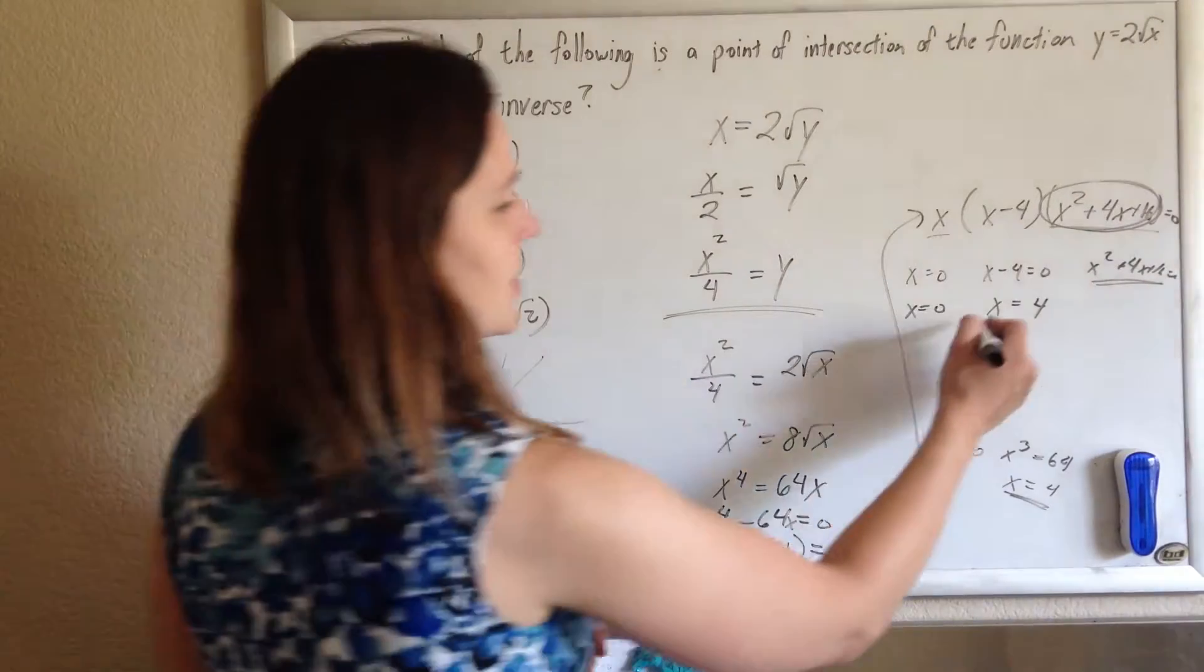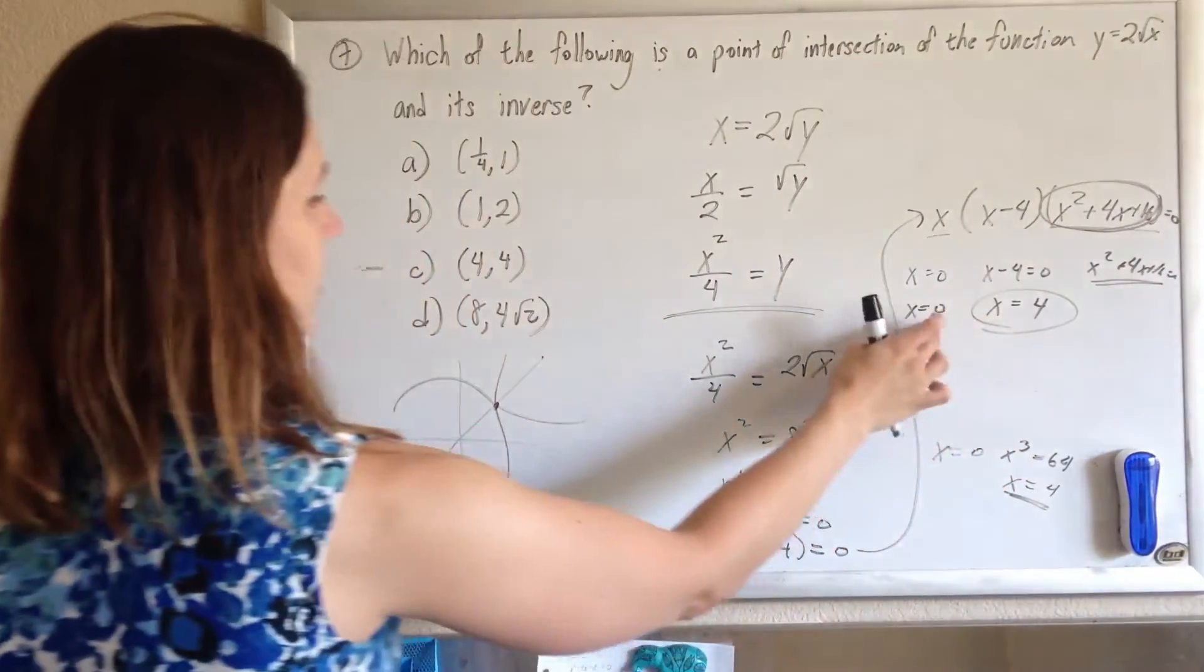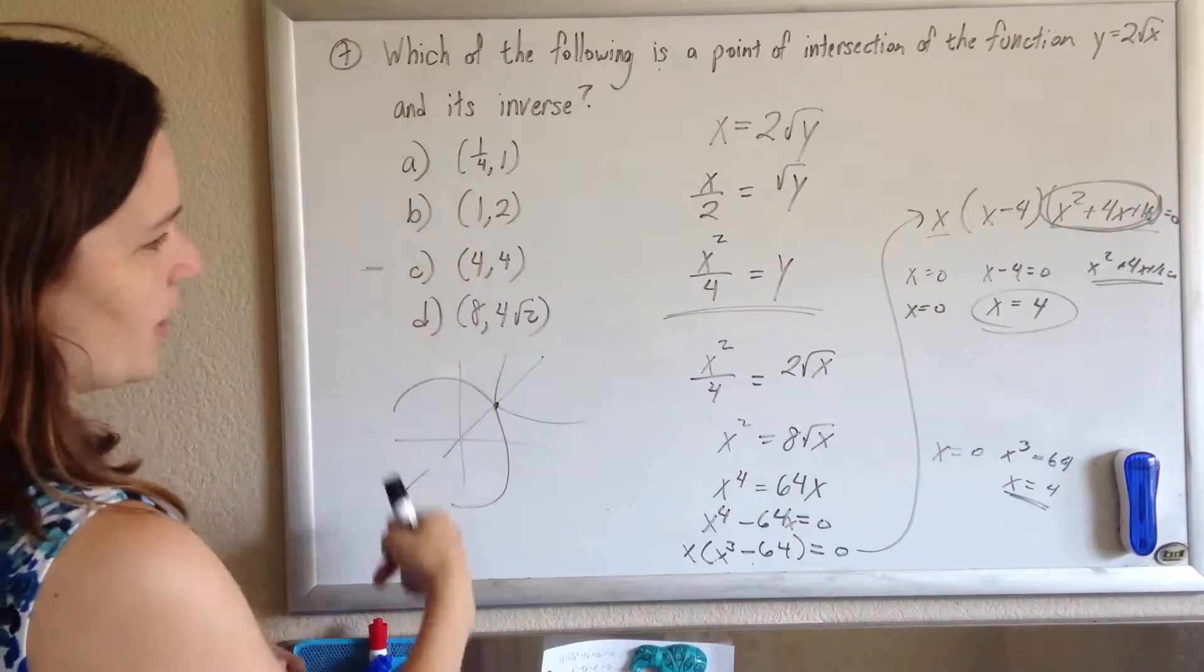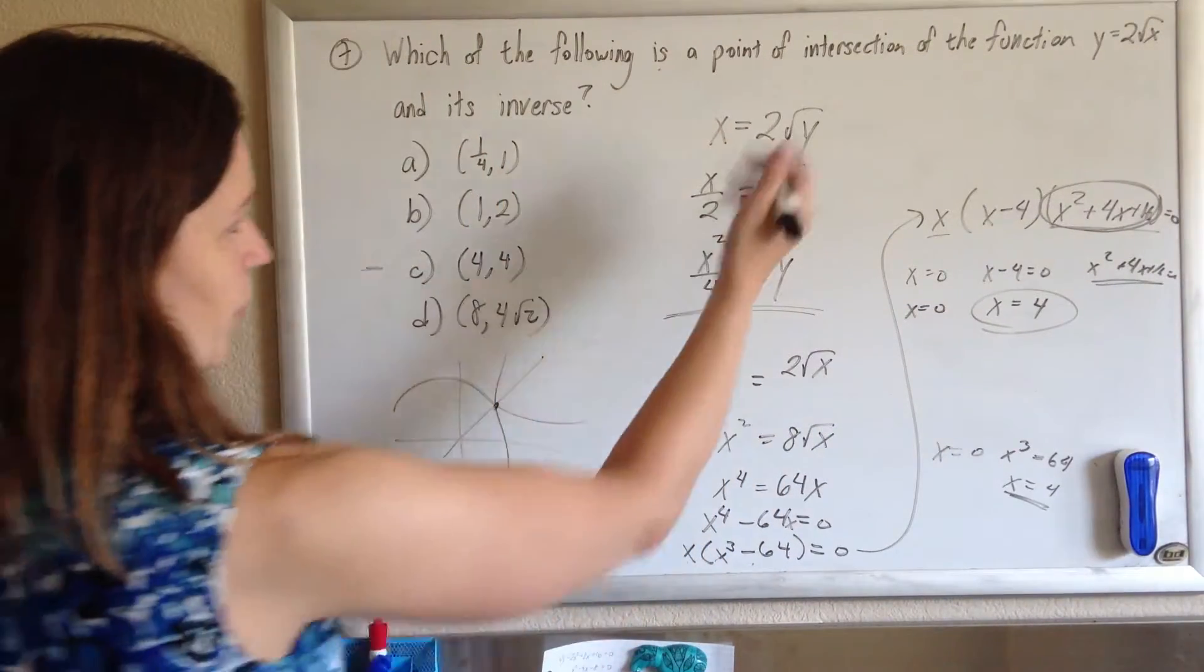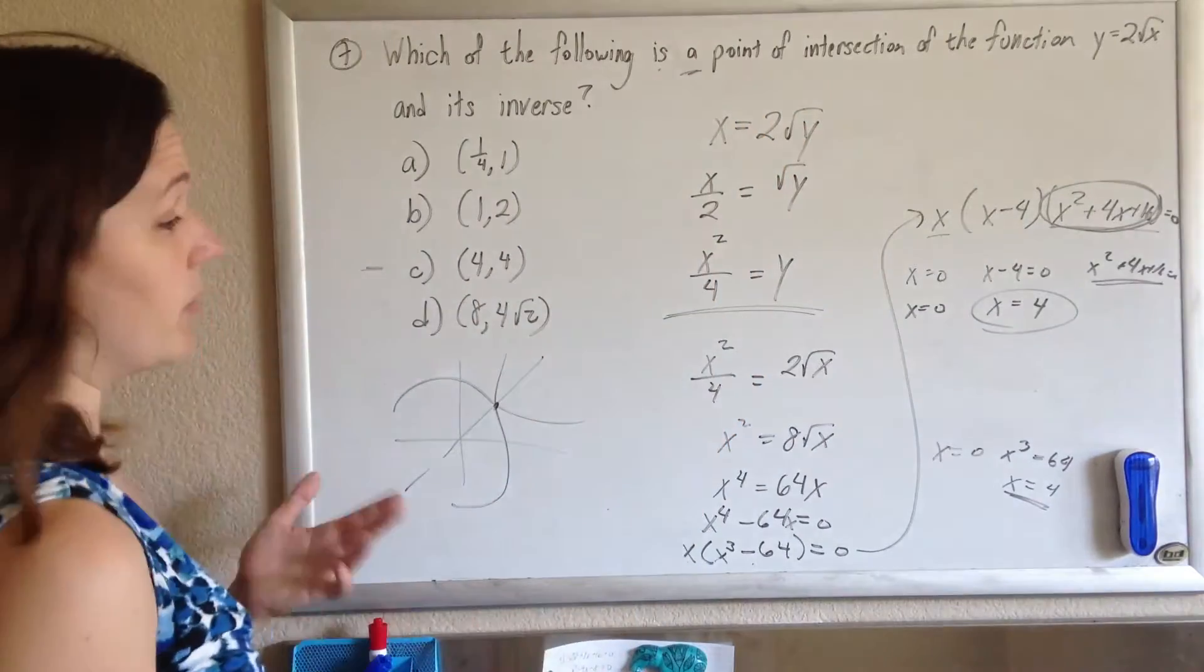So, if x is 4, that's one of them. It looks like it also meets at x equals 0 too. But, that's not in the answer here. They just want a point, not all of the points, apparently.